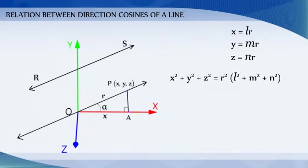Now, X square plus Y square plus Z square equals R square times L square plus M square plus N square.